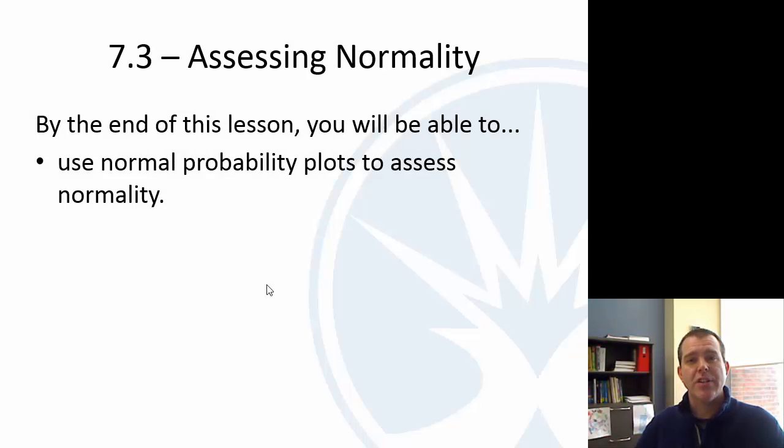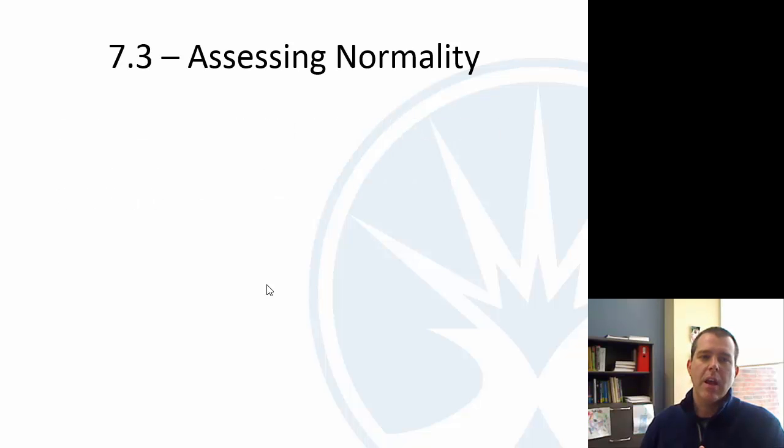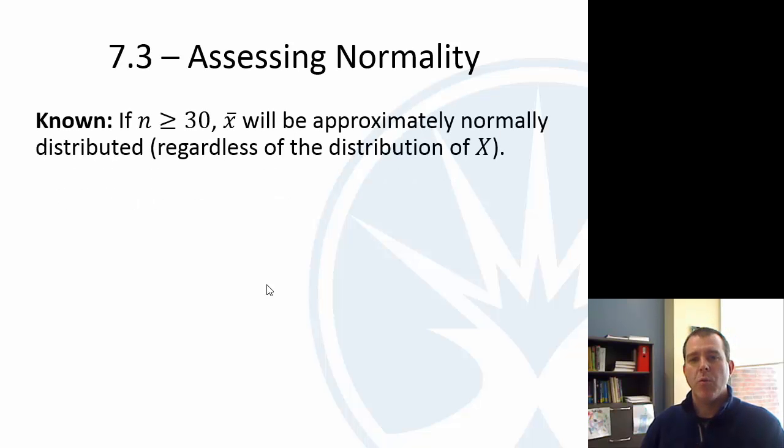Last section in Chapter 7, just a short one here about assessing whether a random sample came from a population that was normally distributed. So, did this sample come from a population that was normally distributed? Here's why we want to talk about it.